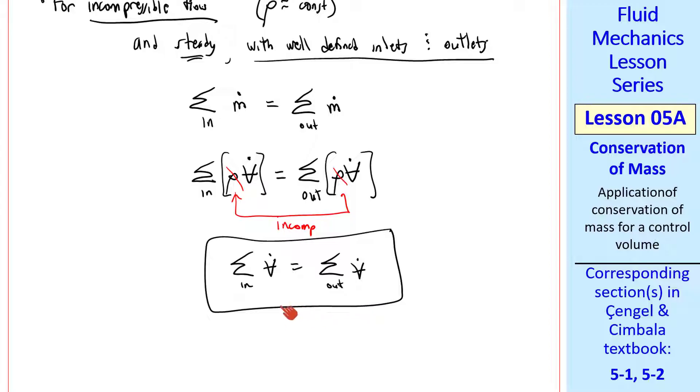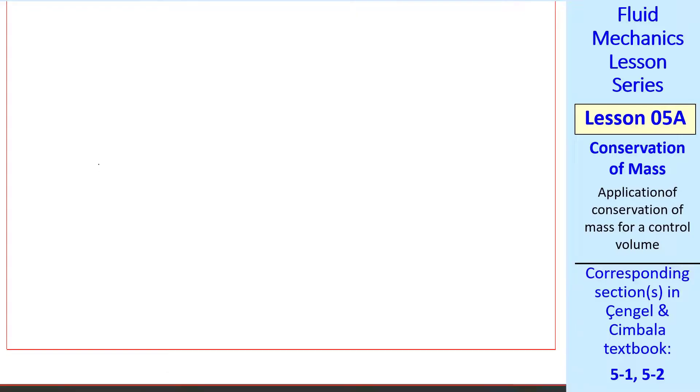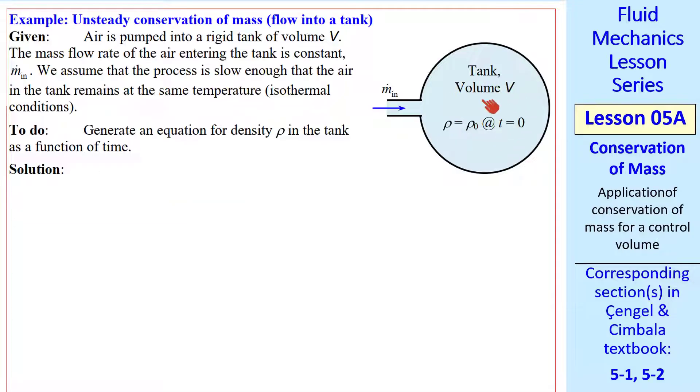Now we're ready to do some examples. We'll do an unsteady example and then a steady example. Consider a tank of volume v. Air is pumped into this rigid tank with a constant m dot in. We'll assume isothermal conditions. In other words, the process is slow enough that the air in the tank remains at the same temperature. There are no outlets, just one inlet. So we know that density is going to have to go up. At time t equals zero, density is rho naught. We want to generate an equation for density in the tank as a function of time.